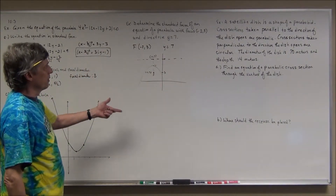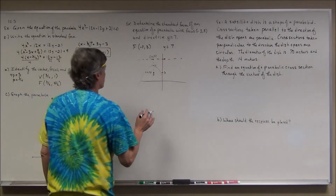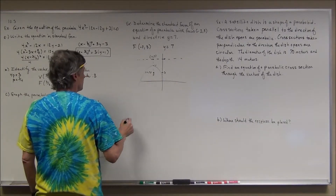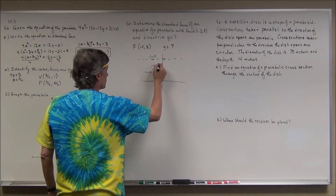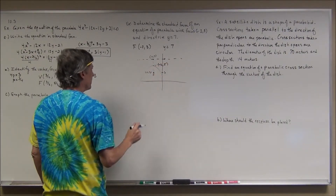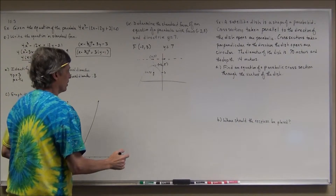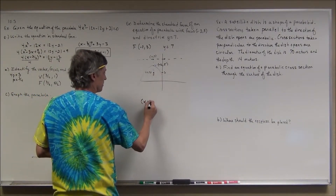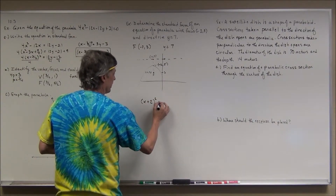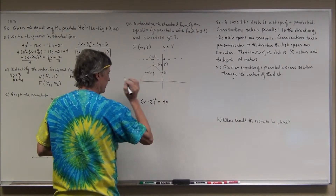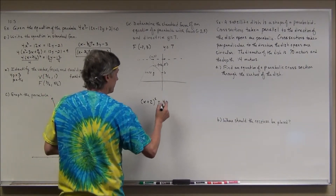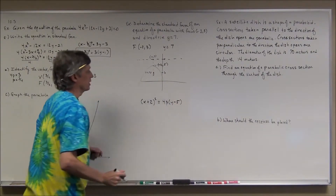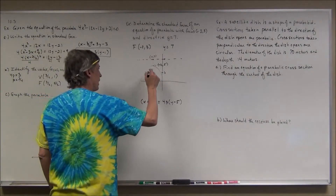Since it opens downward, p is going to be a negative number. Finding the vertex: the midpoint between (negative 2, 3) and (negative 2, 7) gives vertex at (negative 2, 5). Since x is being squared and the vertex is (negative 2, 5), the equation starts as (x plus 2)² equals 4p times (y minus 5). I still need to find p.